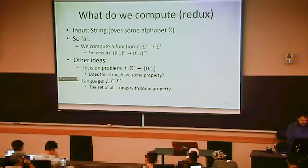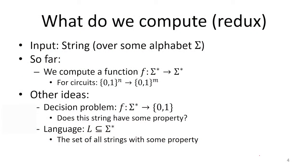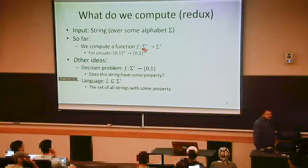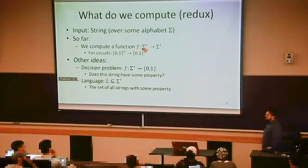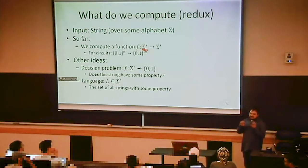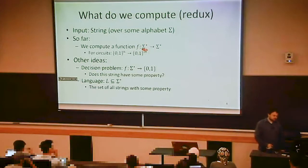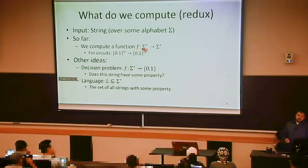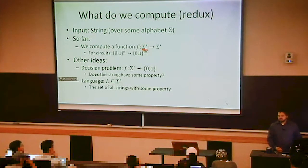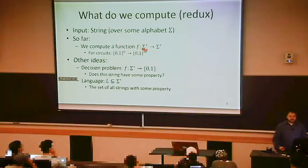We started by saying that the type of thing we might compute was going to be taking a string as input. Why did we take a string as input? Because pretty much anything that we could ever want to write down, we could represent with a string. Our English language is built on strings — text with characters. Anything that humans can think about, we can write down as a string somehow. So we liked strings for that amount of generality.